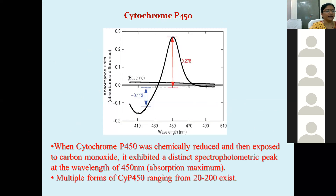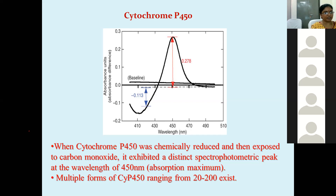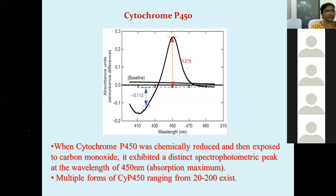Cytochrome P450 exhibits a peak at 450 nanometers on a spectrophotometer — this peak is called the absorption maximum. When Cytochrome P450 is reduced and exposed to carbon monoxide, it exhibits a peak at 450 nanometers. That is why it is called Cytochrome P450 — it has color and peak absorption at 450 nanometers wavelength. So many isoforms exist.